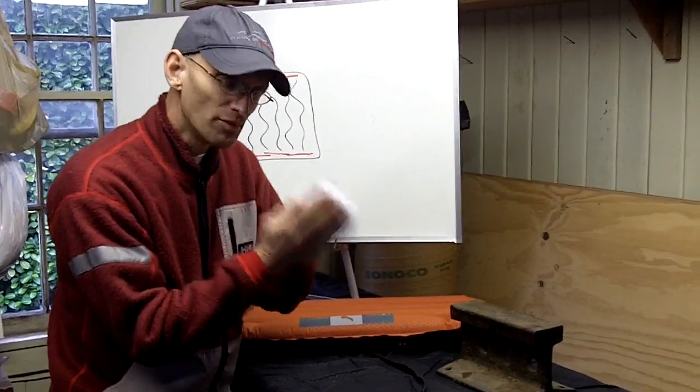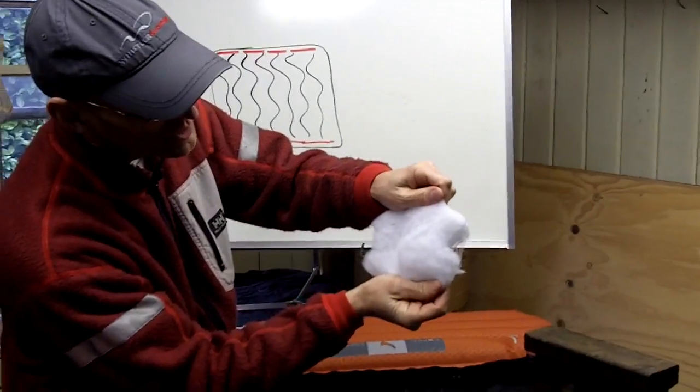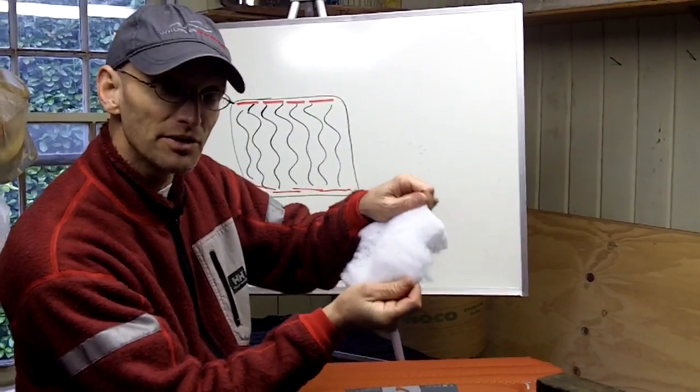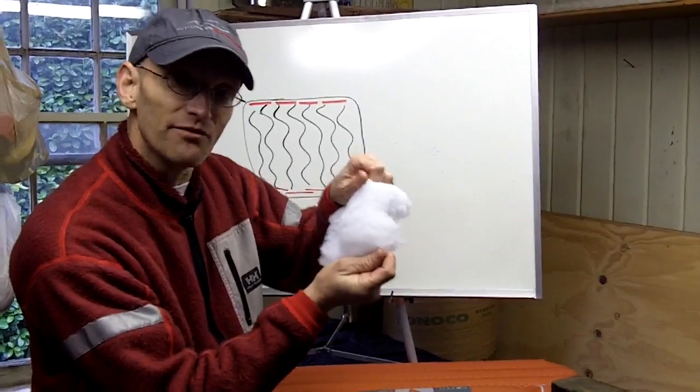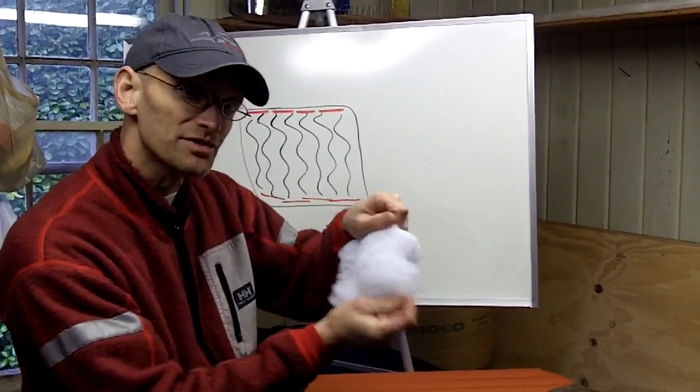So when you have bonded the top and the bottom of that insulation and you inflate the mat, you fill completely that chamber and you have very good insulation at that point. So that's what's going on inside of SYNMAT.